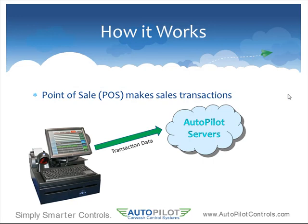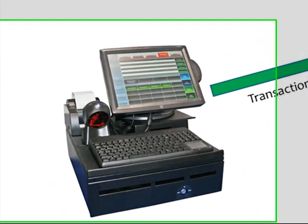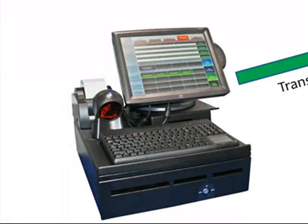We'll start with an overview of how the ProfitPilot works. First you have your point of sale system. This is used to make sales transactions at your car wash. The cashier will select different wash packages for sale and then collect payment.